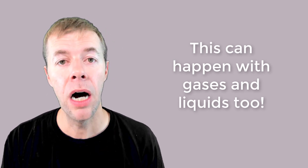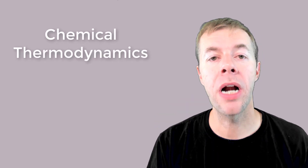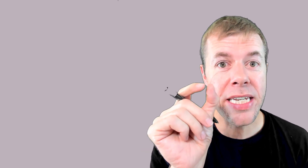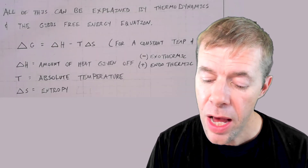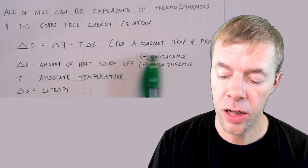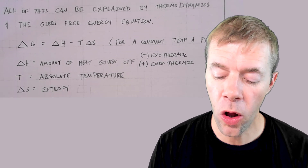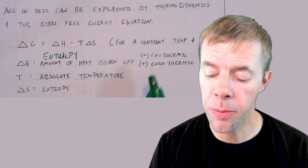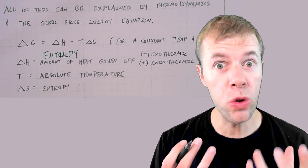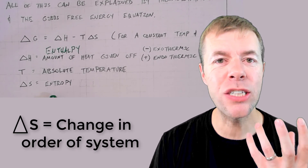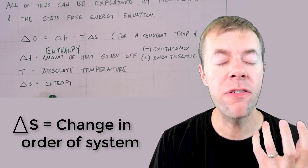All of this can be explained with chemical thermodynamics and the Gibbs free energy equation. The equation is: Delta G equals Delta H minus T times Delta S — and this is true for constant temperature and pressure. Delta H is the enthalpy: how much heat is either given off or taken up by the reaction, whether it's exothermic or endothermic. T is the absolute temperature, usually expressed in Kelvin, at which the reaction occurs. Delta S is the entropy — the change in order or disorder of the system caused by the reaction.